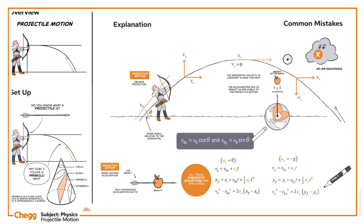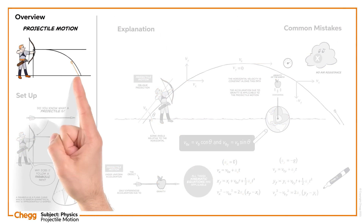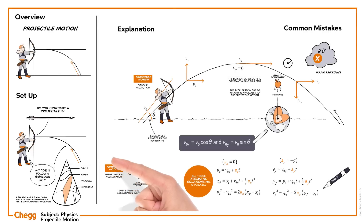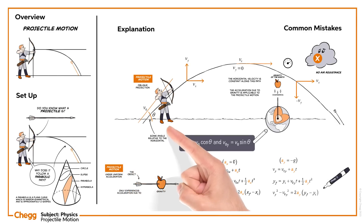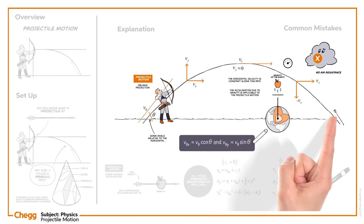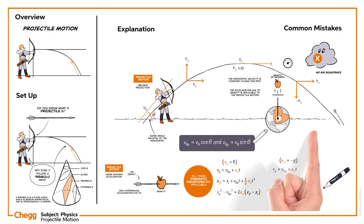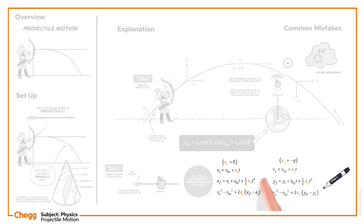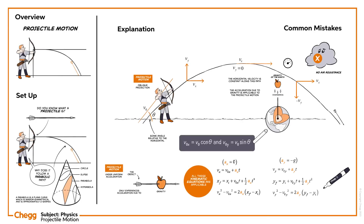In this video, we have understood what a projectile is and discussed the path followed by a projectile. If you are asked to find the time that the projectile is in the air, the maximum height reached by the projectile, and the horizontal range covered, then use suitable kinematic equations for both horizontal and vertical directions and try solving the equations to obtain the required expressions.